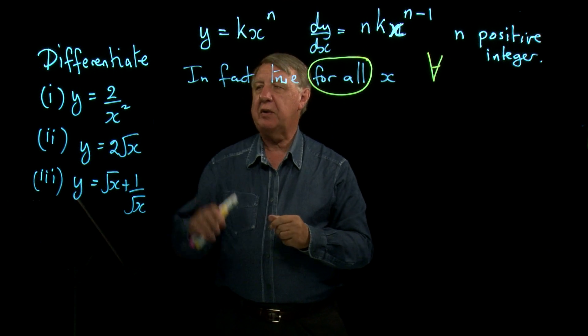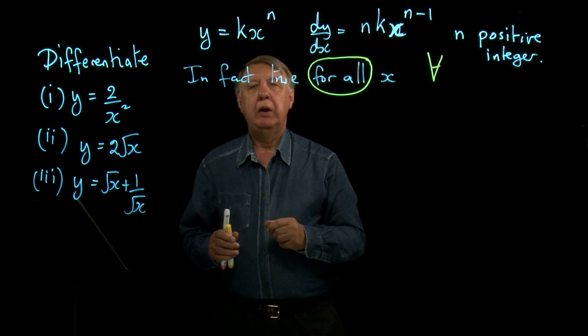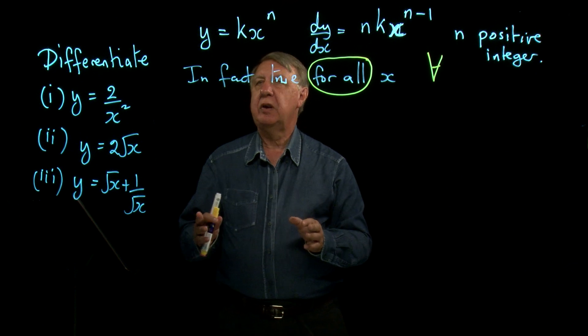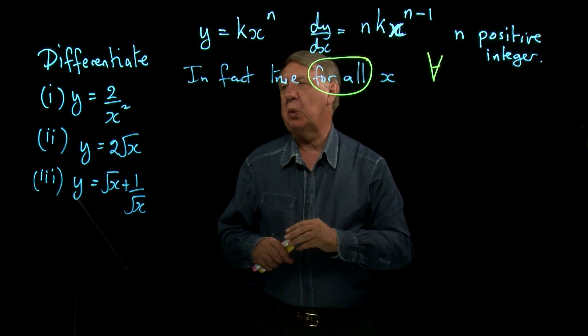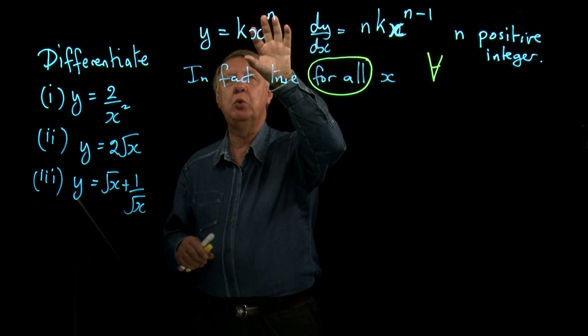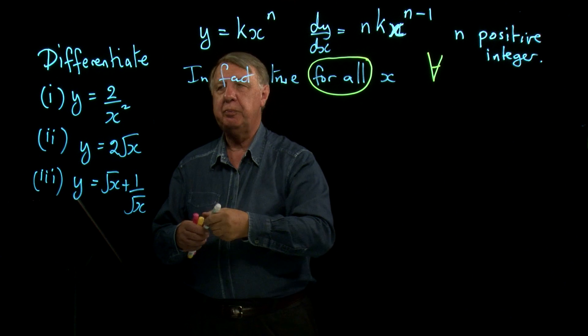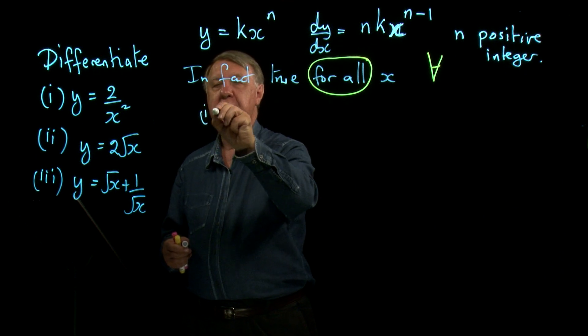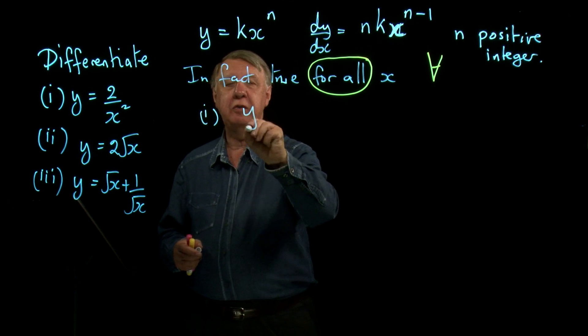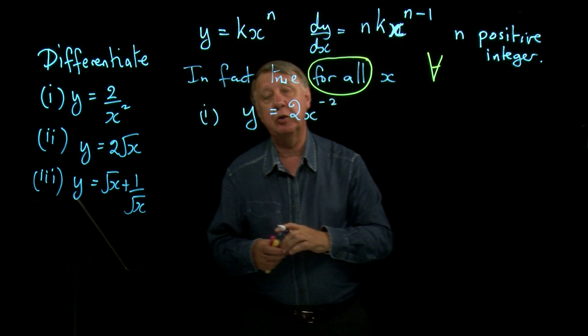Okay, so we've got three examples then to look at over here. In order to use the rule, of course, I must write the equation or the function in this form. So the rule is still to do with this. So in question one, I have to write 2 over x squared as 2 times x to the power negative 2.